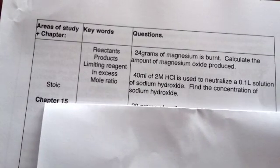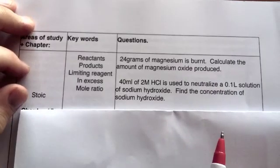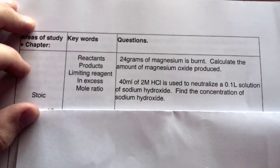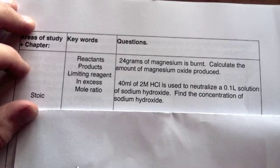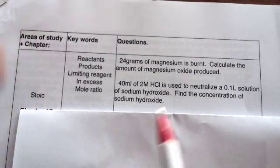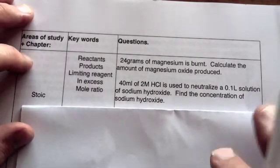The basic stoichiometry problem is that we have two things reacting together and we want to find out how much of something else is going to be created, or we want to find out the concentration of something given that we needed a certain amount to react with it.